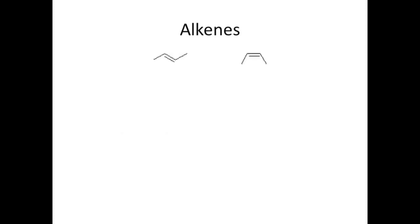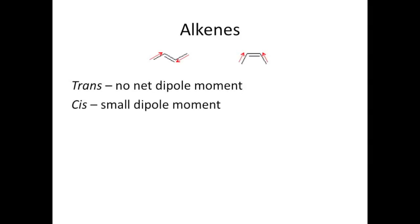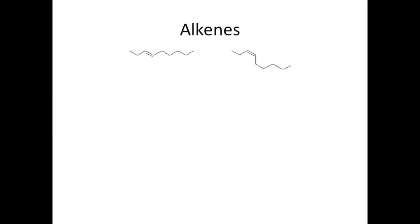When we talk about alkenes, we must always compare and contrast the cis and trans isomers. Here I have trans-2-butene on the left and cis-2-butene on the right. We draw dipole vectors towards the double bond because there's greater electron density there. For the trans isomer, the vectors cancel out, resulting in no net dipole moment. But in cis, they don't cancel each other out, resulting in a small dipole moment. This makes cis isomers experience dipole-dipole interactions in addition to their van der Waals, which causes cis to have higher boiling points than trans. For melting point, the trans isomer packs much more efficiently than the cis, which means trans isomers have higher melting points than cis.